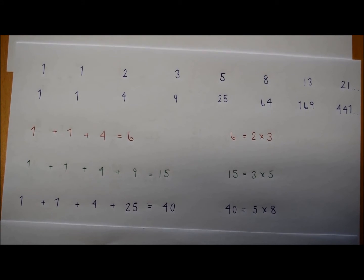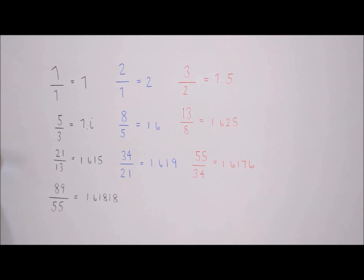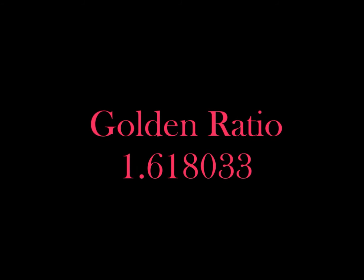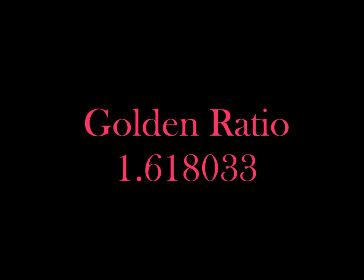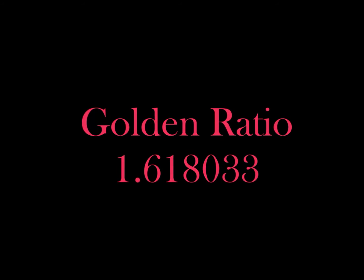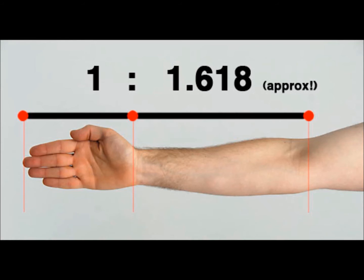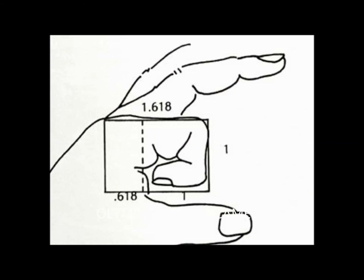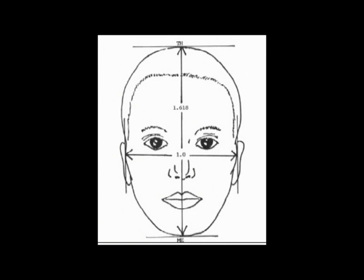If we divide a Fibonacci number by the one that comes previously in the sequence, we see an unusual pattern occurring. The numbers grow towards 1.618033, which is known as the golden ratio. We see this ratio everywhere in nature, including our faces. The ancient Greeks used to say that faces in the ratio of 1 to 1.618 were the most beautiful, and all beauty is mathematical.